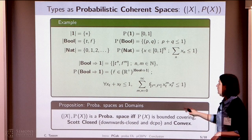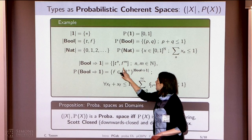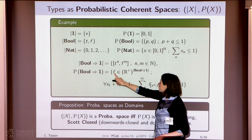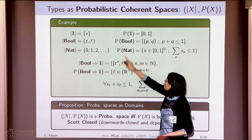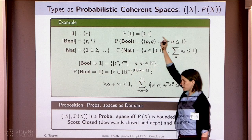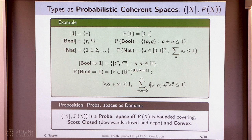But when you move to higher order, even for first-order functions, you lose this intuition. The indices of the vectors will be finite multi-sets of true and false, and the probabilistic space will be operators that preserve probabilistic spaces — sending vectors in one probabilistic space to another. You can see that it looks like an analytic function in two different variables.